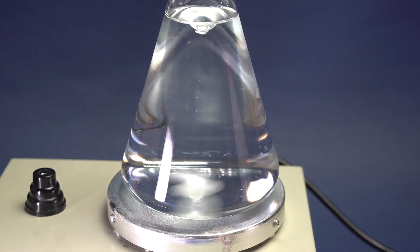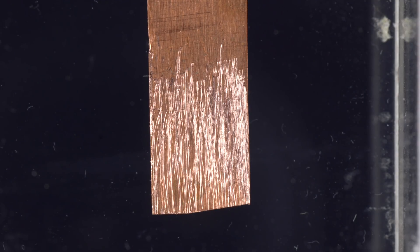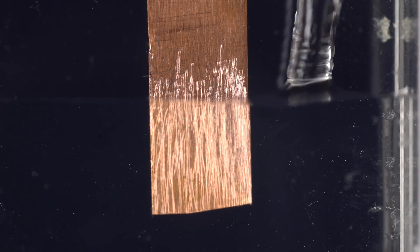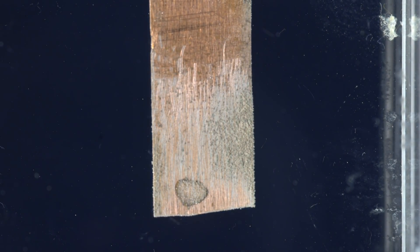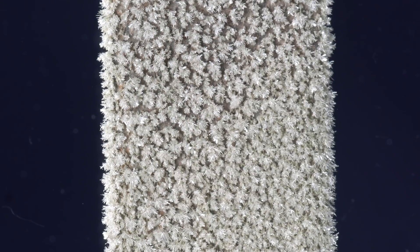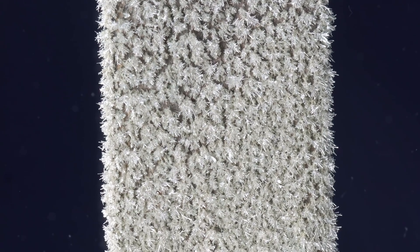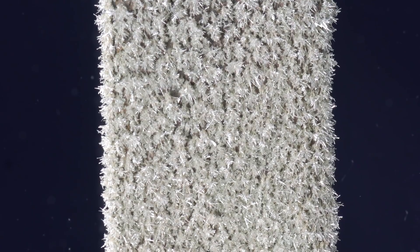We just need to pour a weak silver nitrate solution into a container with a copper plate. In some time, there will grow beautiful metallic silver crystals on the surface of copper, and the copper itself will be slowly dissolving, substituting silver in the solution.